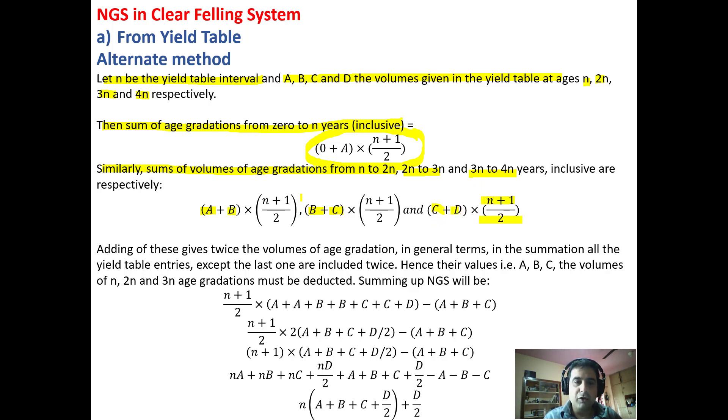These are the volumes of age gradations: 0 to N, N to 2N, 2N to 3N, and 3N to 4N. Now we have to add all these to get the growing stock. But if we carefully observe these terms, A is occurring twice, B is occurring twice, and C is occurring twice, except D.